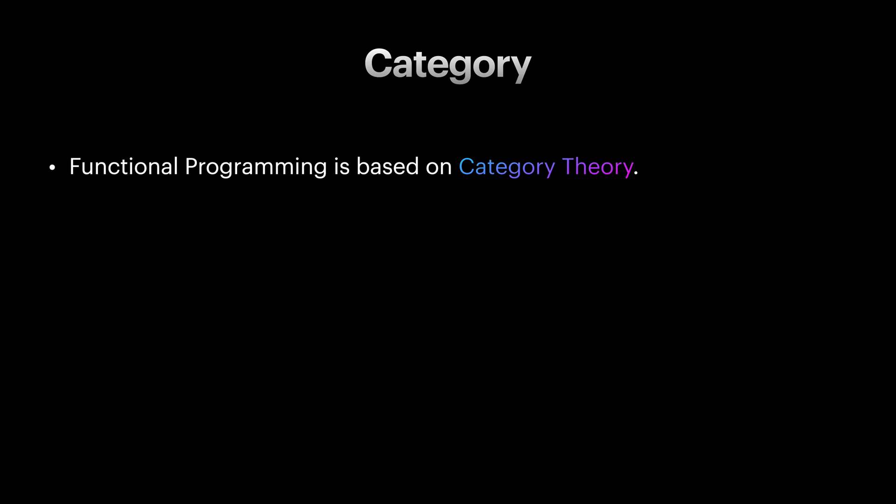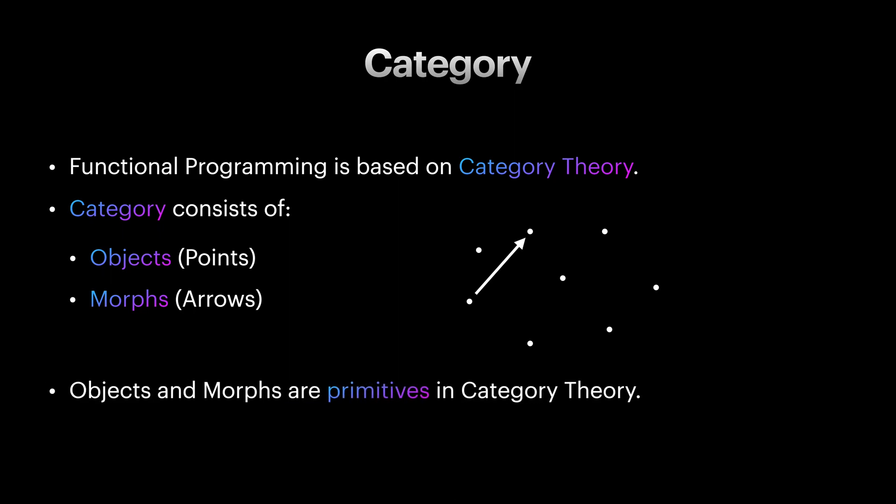What do we talk about in category theory? Well, we talk about categories. A category is simply a bunch of objects, which here I'm showing with dots, and arrows between them, which are called morphs. Objects and arrows are primitive and don't have any internal structures in categories, other than arrows start from an object and end with an object.